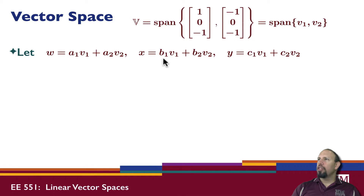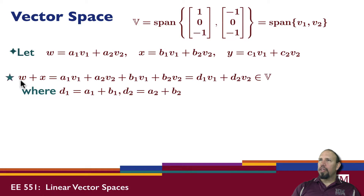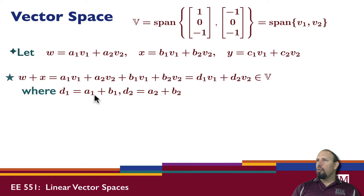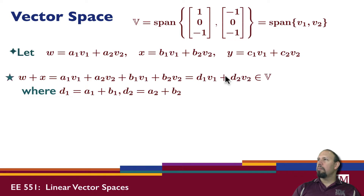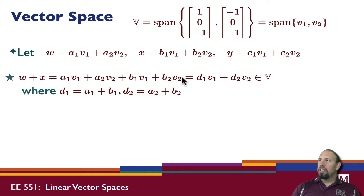W is defined by coefficients A1 and A2, X by B1 and B2, and Y by C1 and C2. Looking at the first defining property: W plus X — I can factor out V1 and V2, getting constants D1 and D2. Since A1 and B1 are complex, D1 is complex; A2 and B2 are complex, so D2 is complex. This is a weighted sum with complex coefficients, so it is in the vector space.